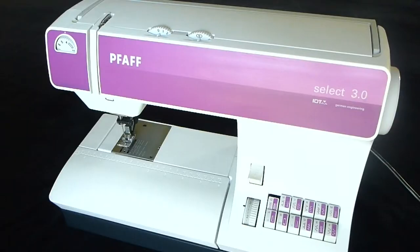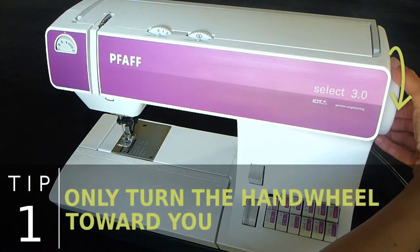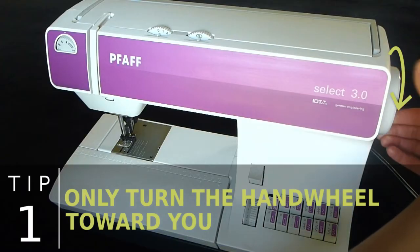We will continue our sewing practice without thread to prevent the possibility of jamming the machine. Remember the three tips to avoid this problem and practice them while you complete this lesson. Only turn the handwheel so the top of the wheel is moving toward you.